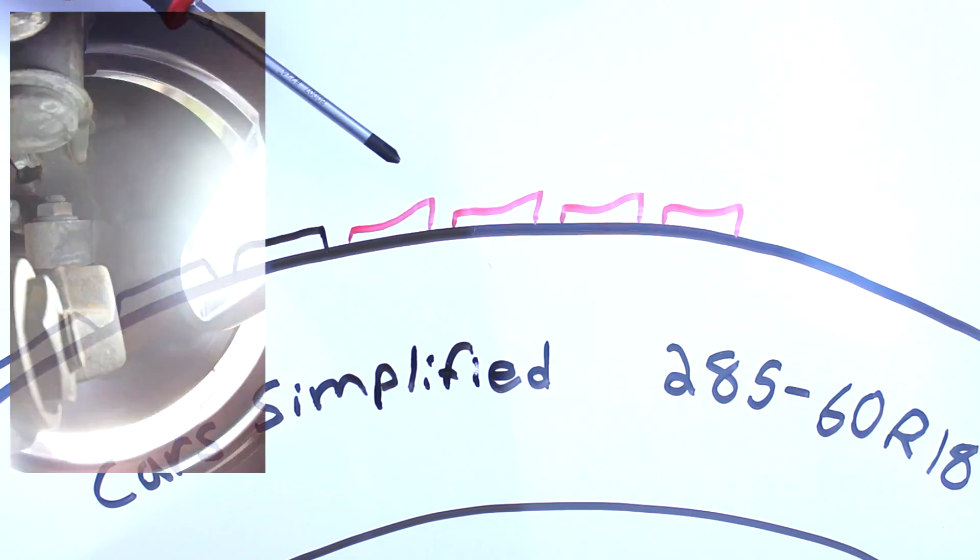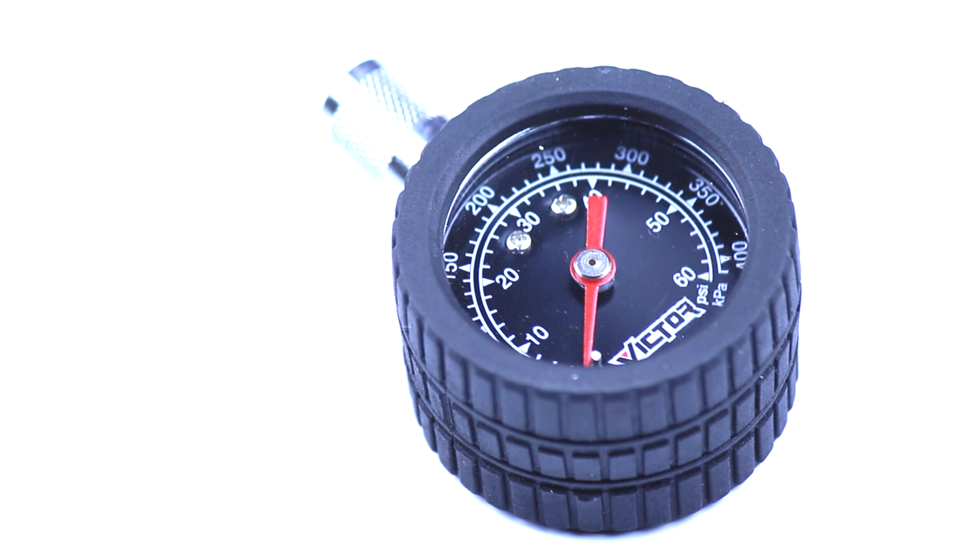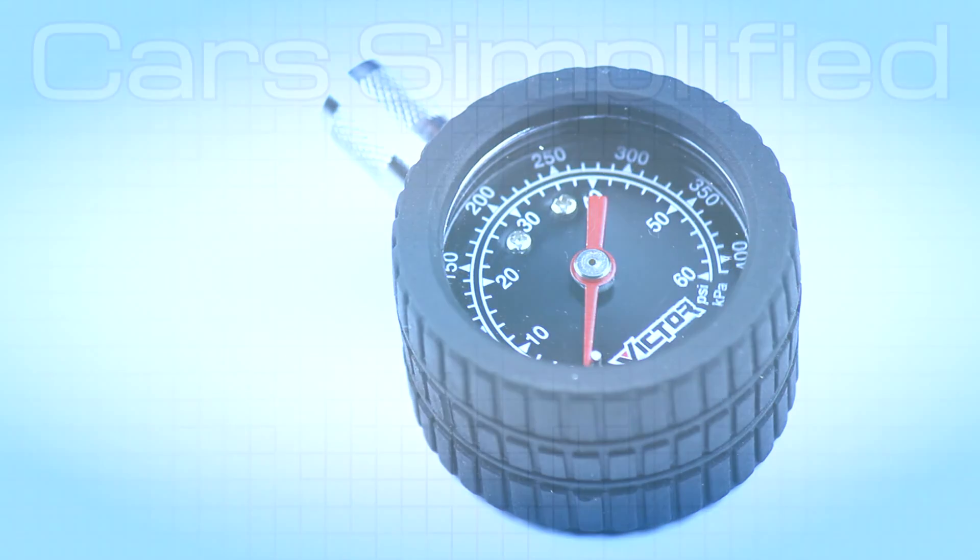This kind of wear can be caused by worn out suspension components or toe issues. I hope that made understanding your tires just a little bit easier. Thanks for watching. I'll see you in the next Car Simplified video.